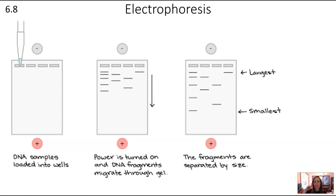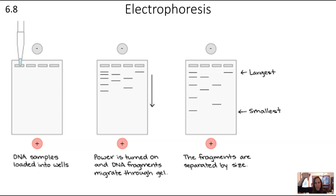How does gel electrophoresis work? You load DNA into the wells at the top of the gel, then connect a negative and positive charge to the different sides. DNA is negatively charged — those phosphate groups carry the negative charge — so when there's a negative charge on the side with the DNA, it repels the DNA toward the positive side. Power is turned on and the DNA fragments migrate through the gel, separated by size.